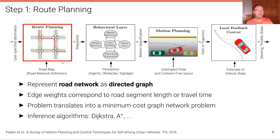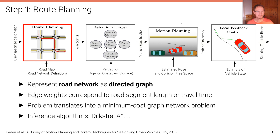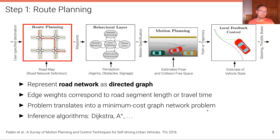The first step is route planning. Here we represent the road network as a directed weighted graph comprising nodes and directed edges that indicate along which paths the vehicle is allowed to drive. Edge weights correspond to road segment length or travel time, which the inference algorithm uses to find the most efficient route. This problem is translated into a minimum-cost graph network problem solvable using standard algorithms from the graph literature, such as Dijkstra's algorithm or the A* algorithm.